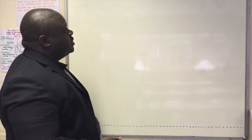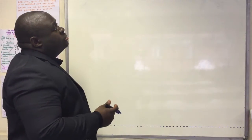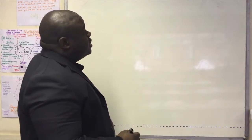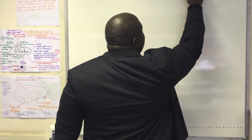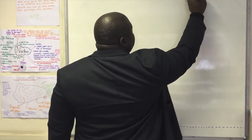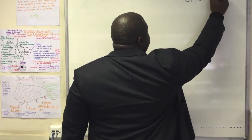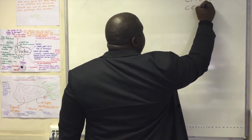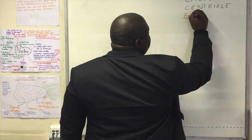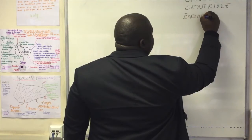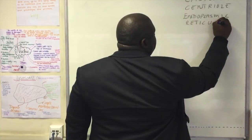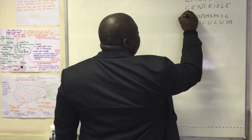Some of these you know already from GCSE, others may be a bit new, but these are the words you need to know — the labels you need to know so far as cell structure is concerned. So we have the nucleus, we have the cytoplasm, we have the centriole, we have the endoplasmic reticulum — note the spelling — and we have the cytoskeleton.